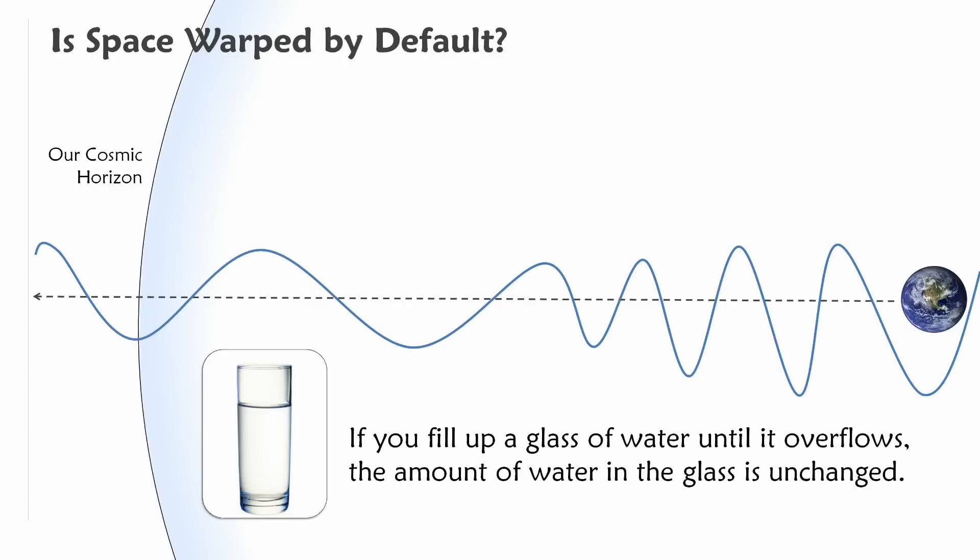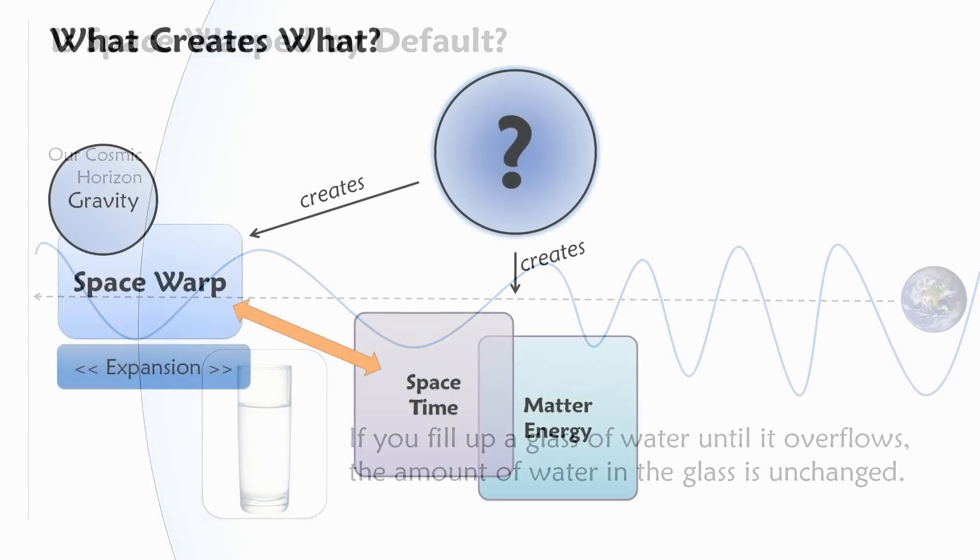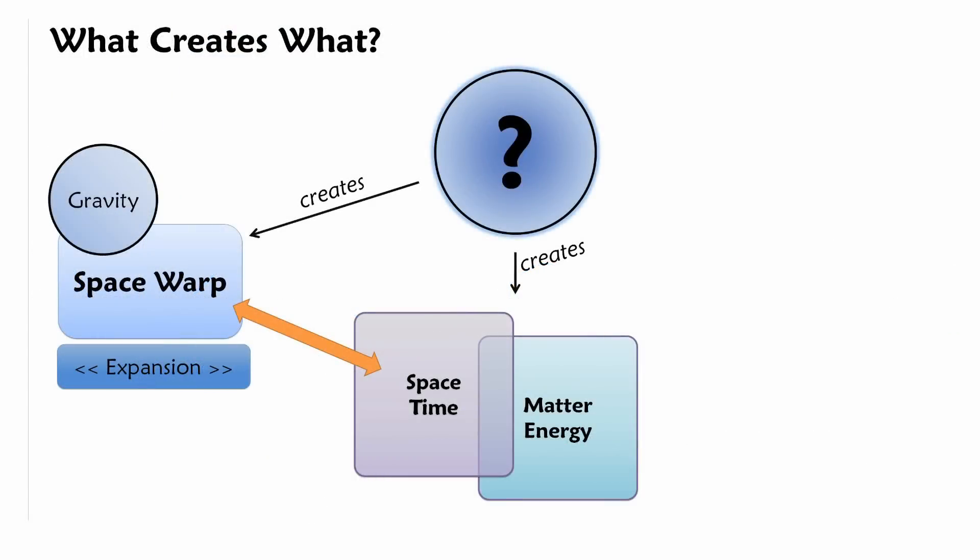At this point, we learned an important detail and can go back to our what creates what puzzle. We said that gravity is just the quality of space warp, and now we discovered that space warp is just the quality of space.